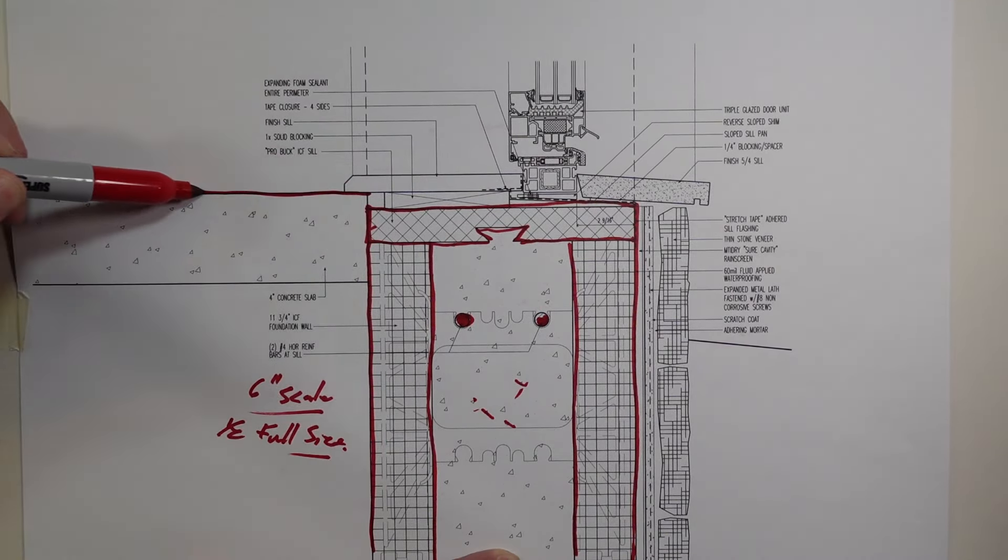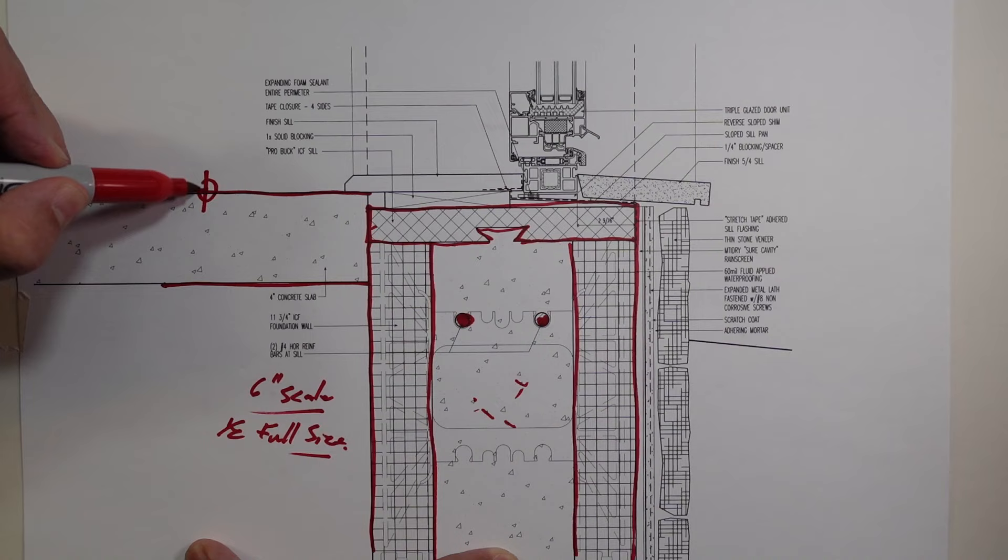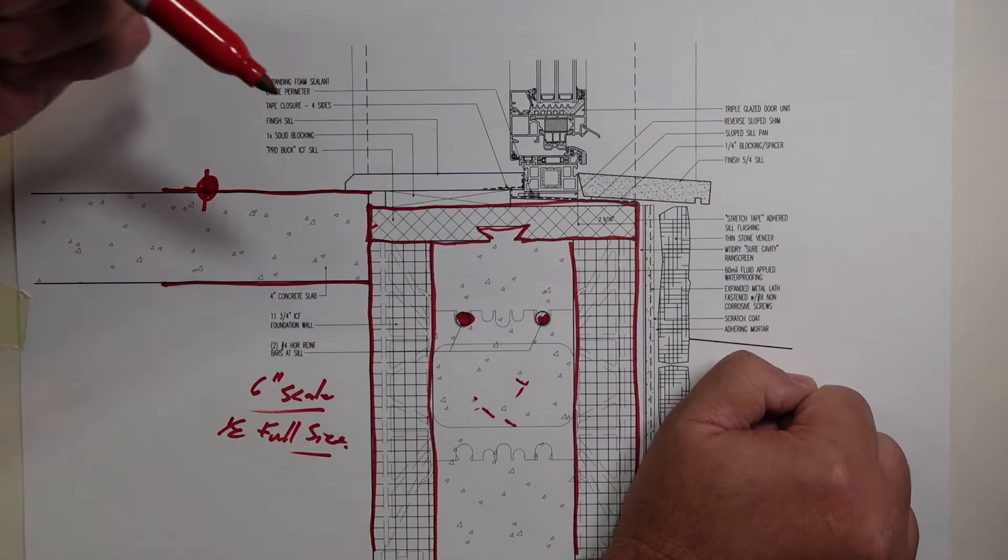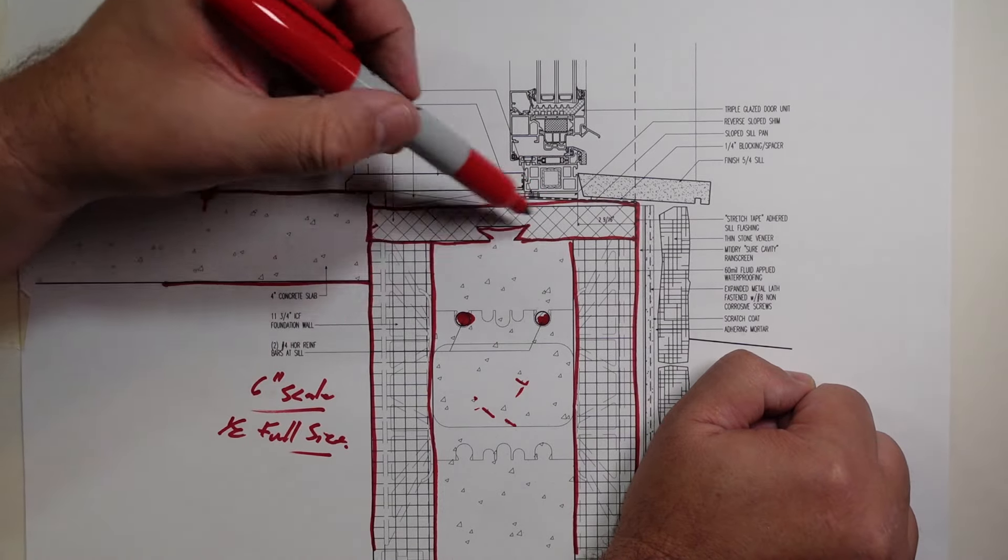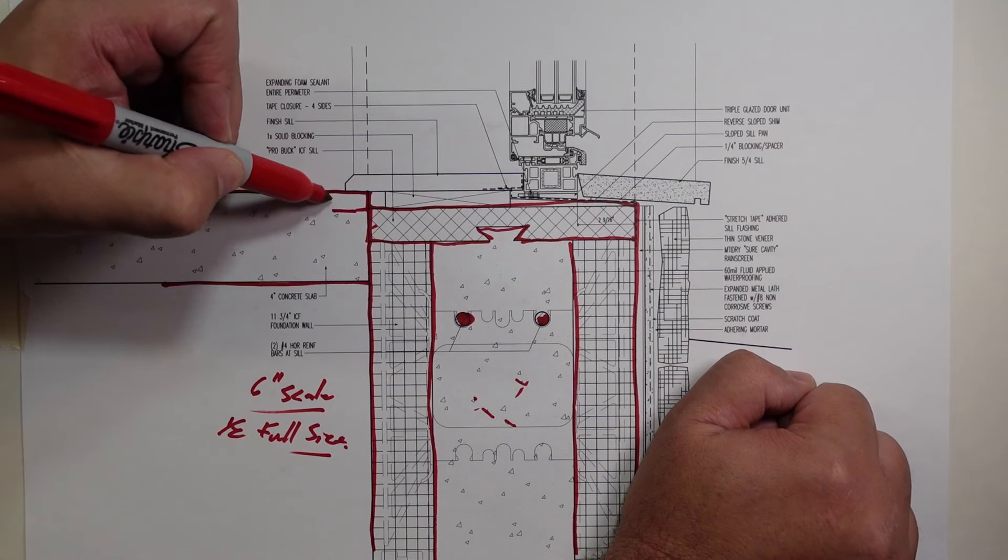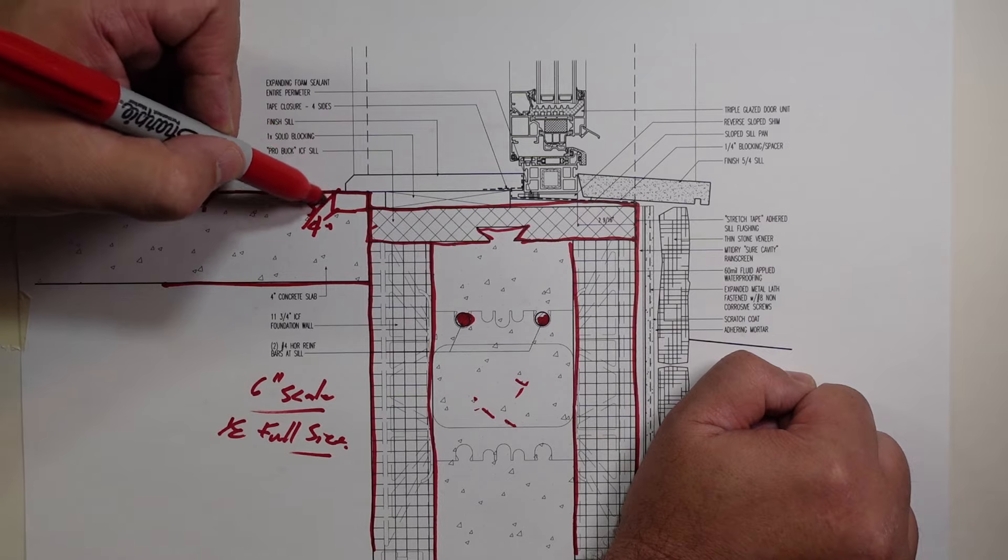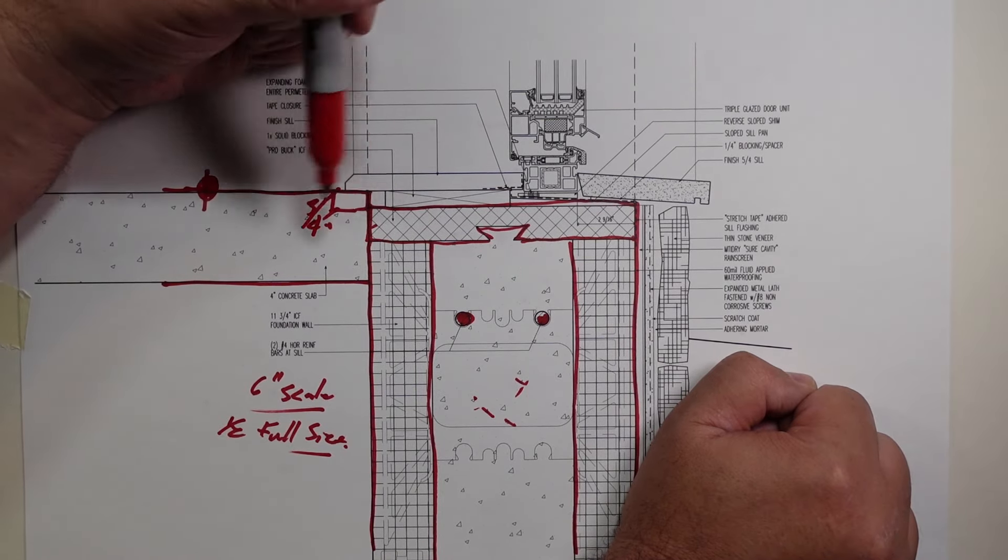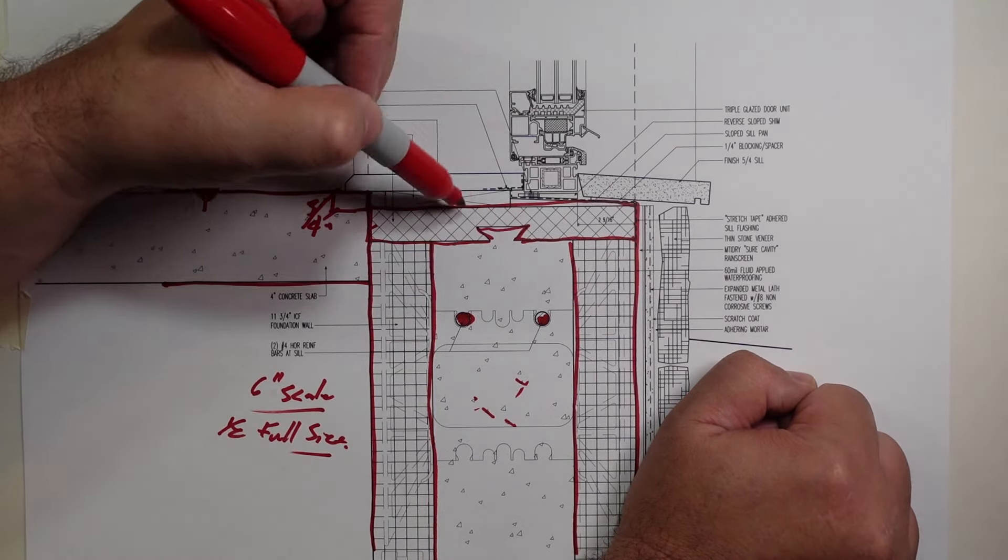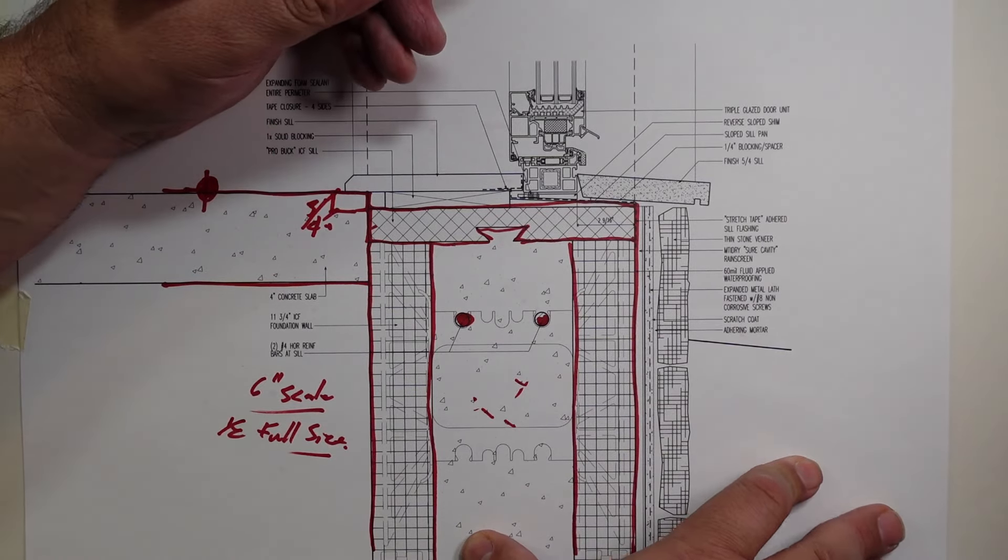An important thing is, this is our concrete slab. And notice, this is the height of the floor there. So when we actually poured this elevation, it was planned on being so that this is down 3 quarters of an inch. And then that gives us some play, actually, for setting up a drainable back dam sill pan, if you will.